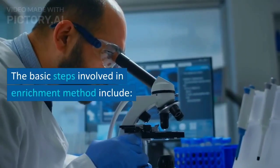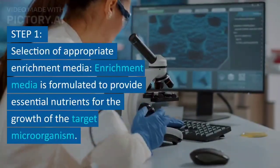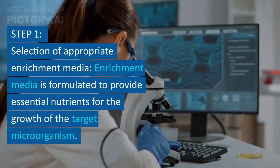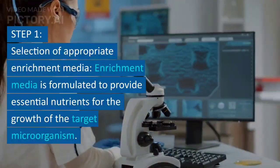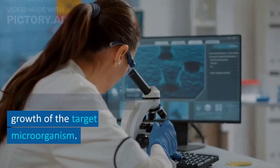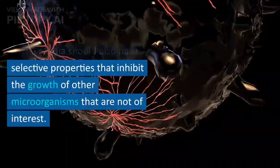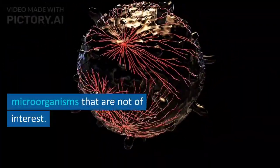The basic steps involved in enrichment method include: Step 1, Selection of appropriate enrichment media. Enrichment media is formulated to provide essential nutrients for the growth of the target microorganism. The media should also have selective properties that inhibit the growth of other microorganisms that are not of interest.